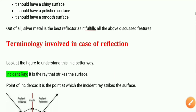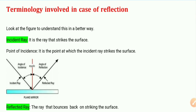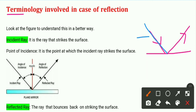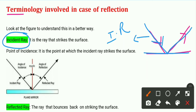Now we will go into reflection in detail and understand some important terms. Suppose there is a plane mirror. When light falls on it and bounces back, the ray that strikes the surface is called the incident ray. The point at which the incident ray strikes the surface is called the point of incidence. The ray that bounces back is called the reflected ray.